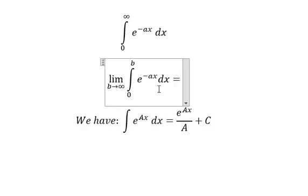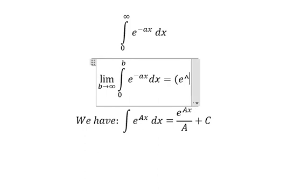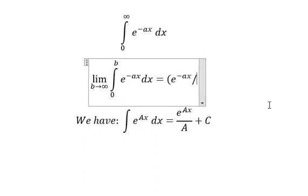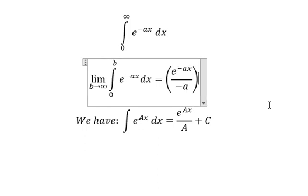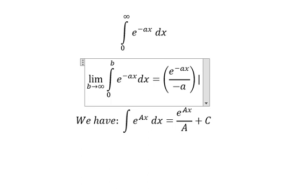Now for the integration of this one, we have negative a, so that means we can put negative a in here. We have it like this, and now we put the bounds from 0 to b.